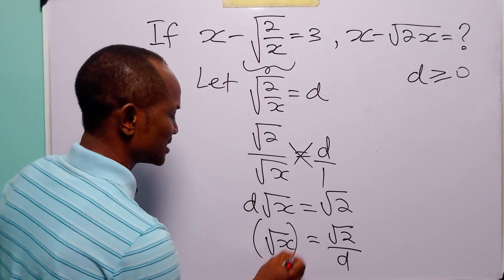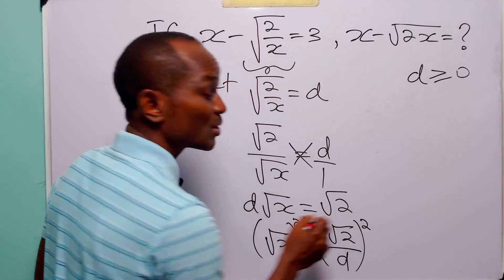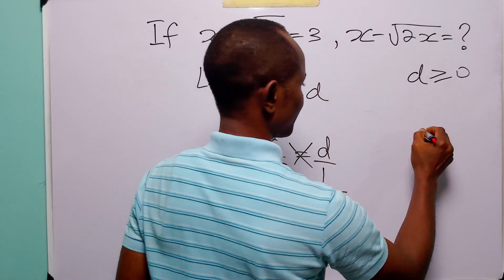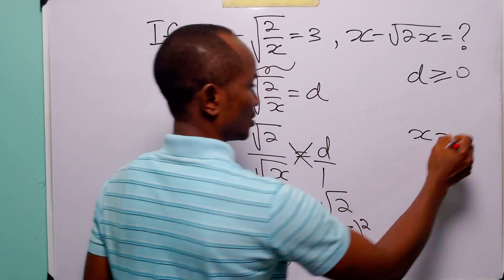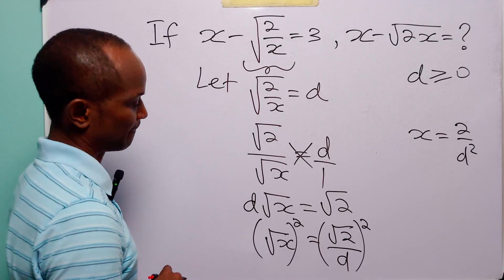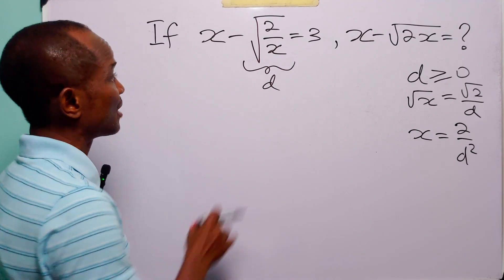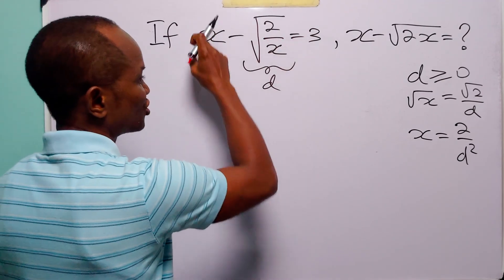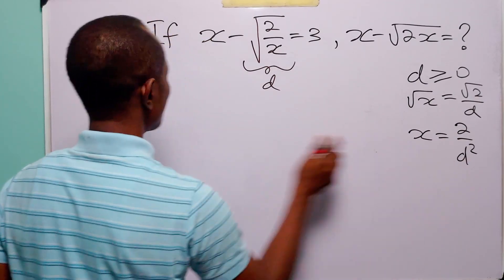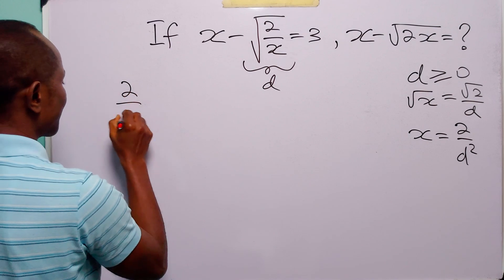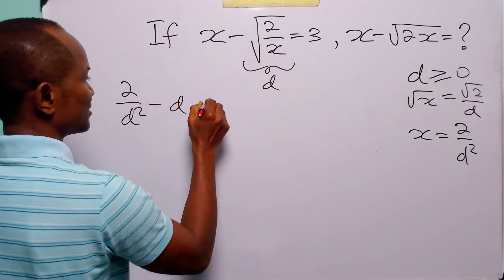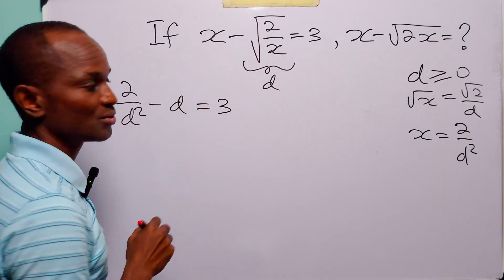The next thing we are going to do is square both sides of this equation. When we do that, we have x is equal to (root 2 over d) squared, which is 2 over d squared. We will now rewrite the original equation in terms of d: x, which is 2 over d squared, minus d equals 3.